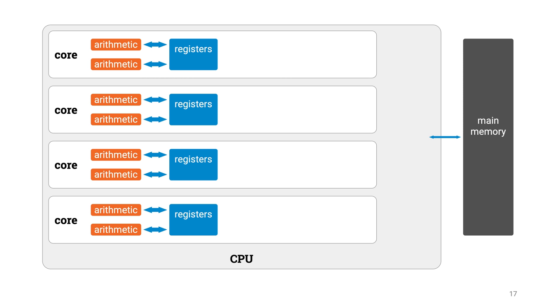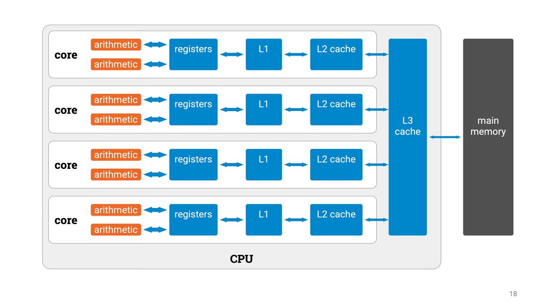But these arithmetic units don't directly talk with the main memory. They can only process information that is already available in the CPU registers. And to get data from the main memory to CPU registers, this CPU needs to go through several levels of cache memory.